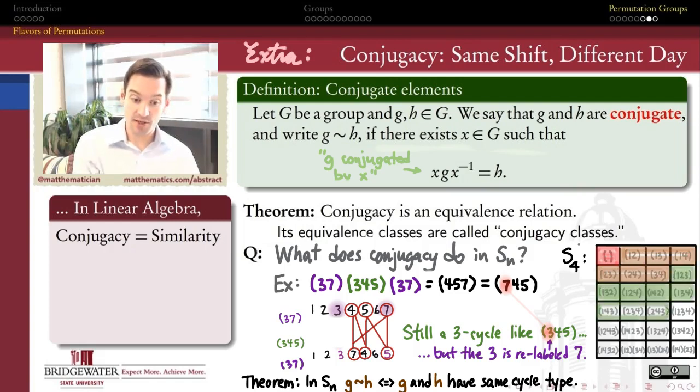All the 3 cycles are conjugate to one another. All the 4 cycles are conjugate to one another. And then lastly, all of these, what I would call 2 plus 2 cycles, products of disjoint 2 disjoint 2 cycles, these are all conjugate to one another. They have the same cycle type. So if we believe this theorem, then S_4 has 5 conjugacy classes.